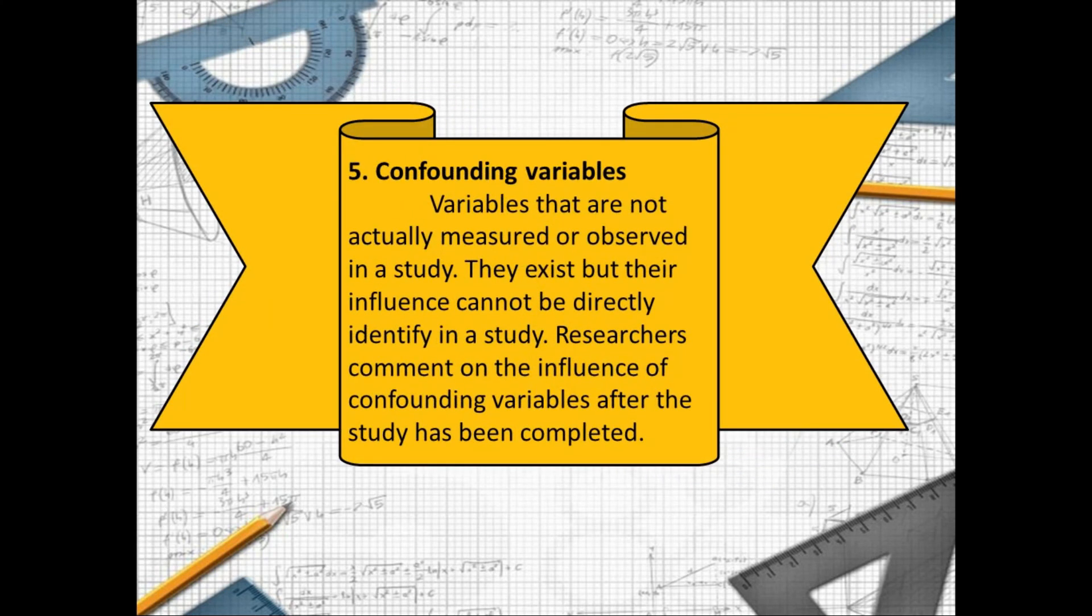Number five: the confounding variables. Variables that are not actually measured or observed in a study. They exist but their influence cannot be directly identified in the study. Researchers comment on the influence of confounding variables after the study has been completed. So most of the researcher can detect confounding variables after the study is done.